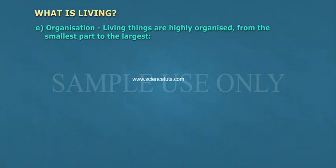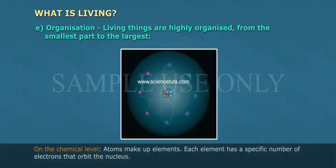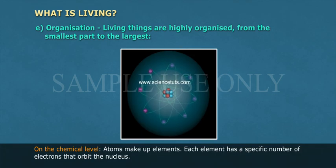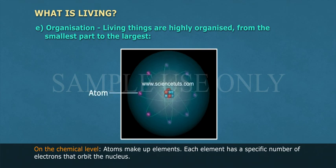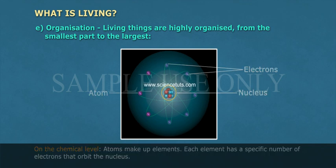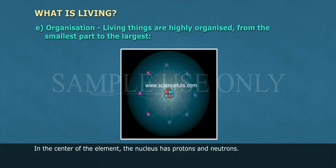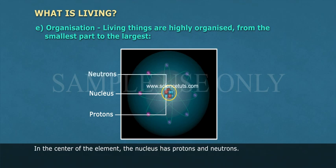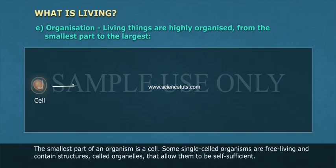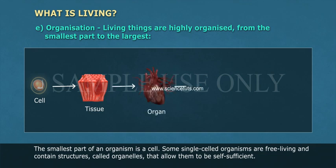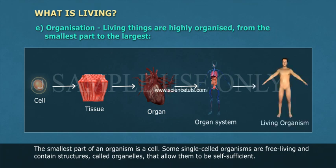Organization: living things are highly organized, from the smallest part to the largest. At the chemical level, atoms make up elements. Each element has a specific number of electrons that orbit the nucleus, which has protons and neutrons. The smallest part of an organism is a cell.